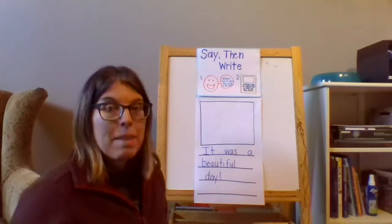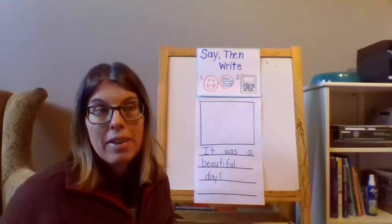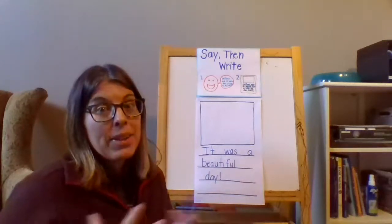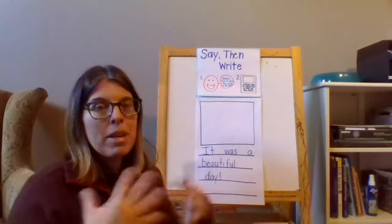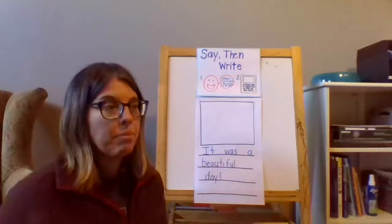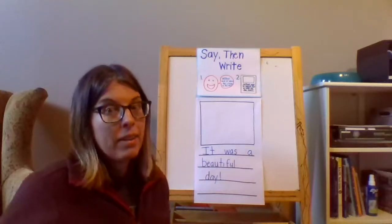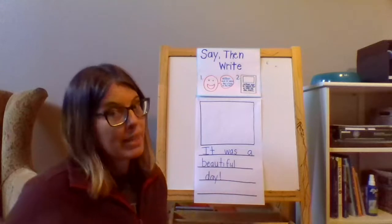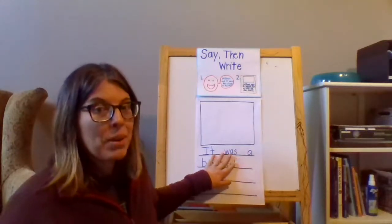Okay. So today, before you write anything down, I want you to talk about it. I want you to say it out loud and practice just telling the story. You could tell it to a stuffie, tell it to a family member. You can even do it to yourself like I did. Think about what you want your sentence to sound like. You can even try it out a couple of different ways like I did. And then go ahead and write it down.